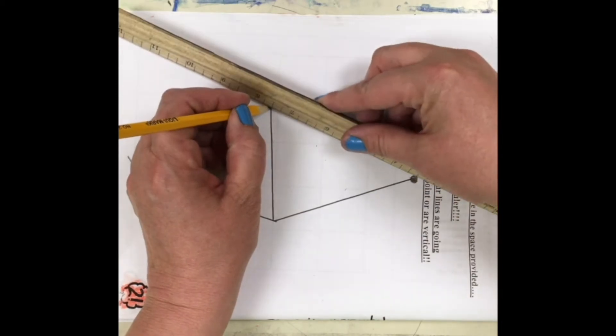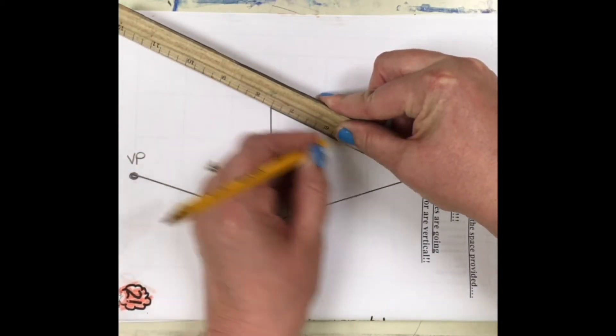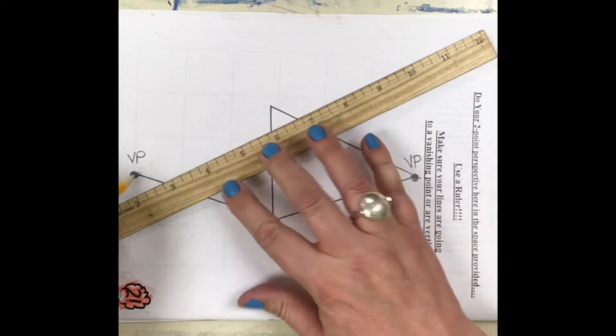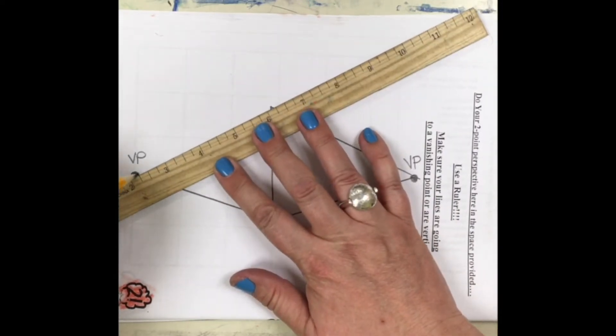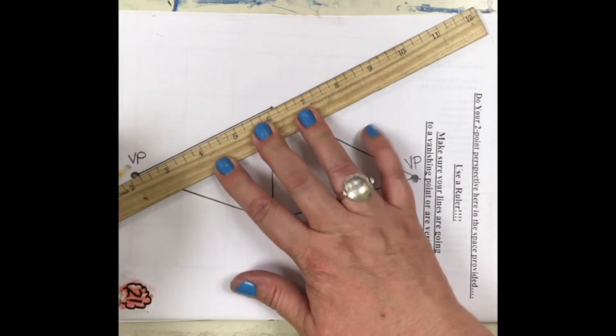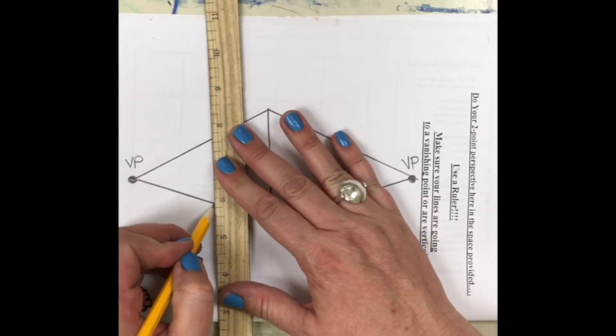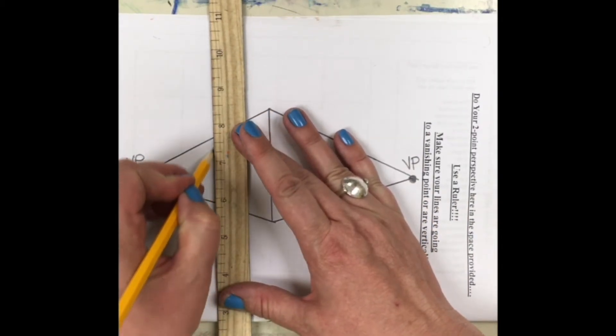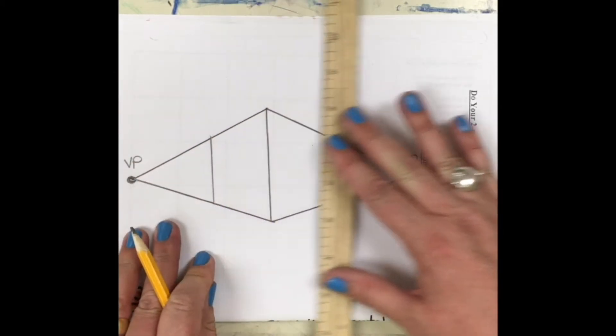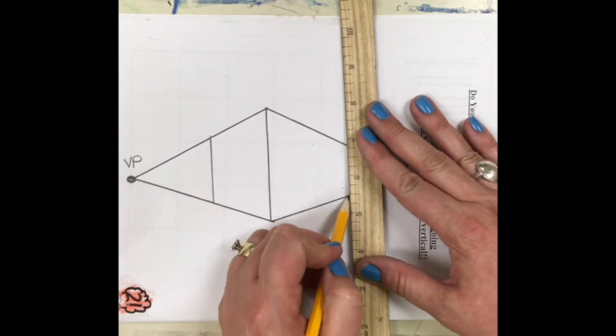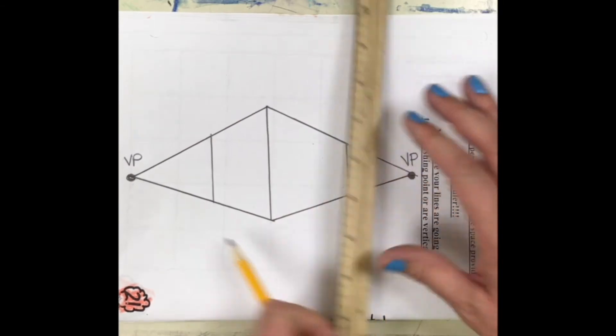So now I'm going to draw a line back from the top of the vertical line to the vanishing point, top of the vertical line to the vanishing point. And then I'm gonna draw the edges or the back of the building. And that can be wherever I want. It just has to be a vertical line.